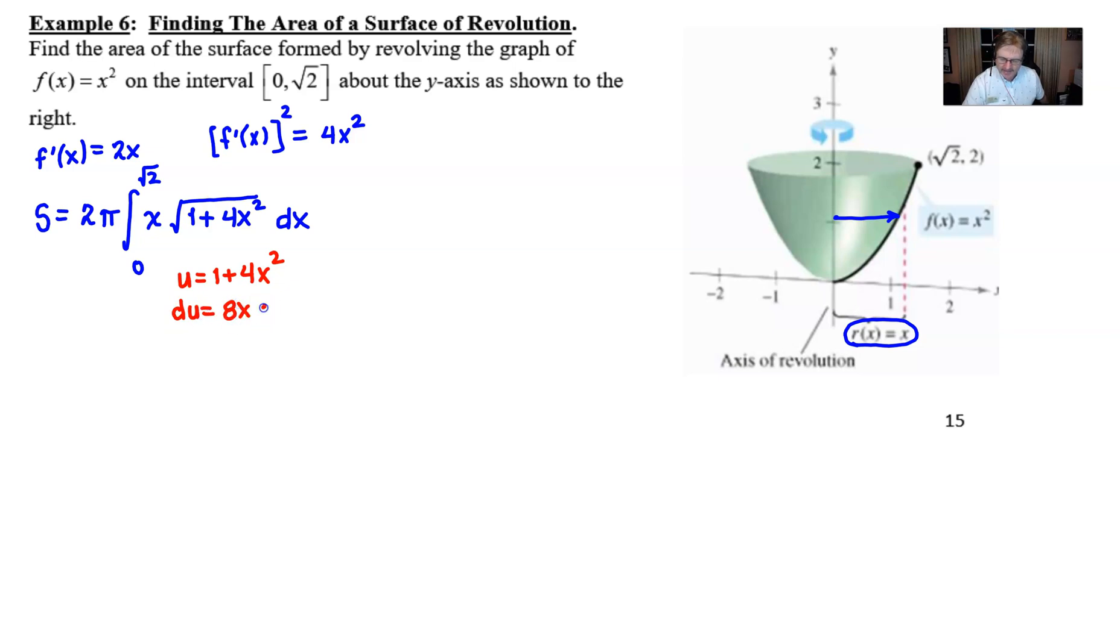So you're going to get 8x with respect to x, which means you're going to have to put a 1/8 in front to offset that result. So now we're going to integrate the square root of u with respect to u.